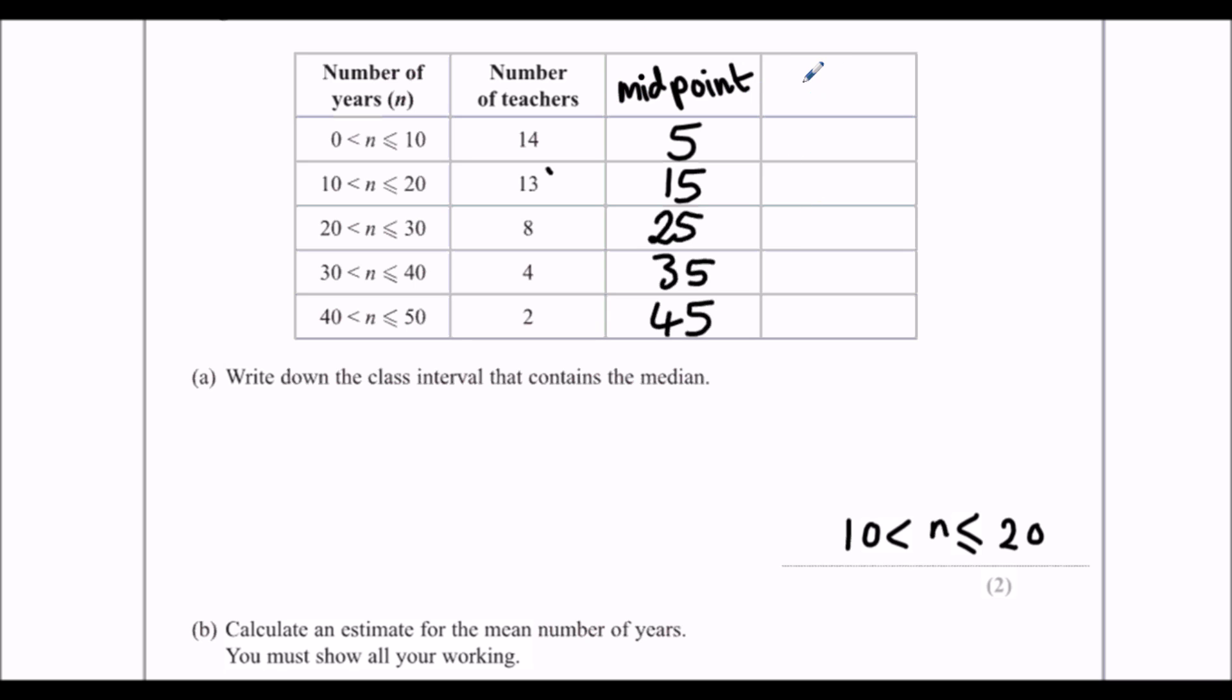And then we're going to do the midpoint times frequency. So 14 teachers teaching for 5 years. We can do this in the calculator. 14 times 5, we're going to times them across, and it's 70. So 14 teachers teaching for 5 years, that's 70 years in total. Then we've got 13 times 15. Again, use the calculator, 195. 8 times 25, which is 200. 4 times 35, which is 140. And 2 times 45, which is 90.